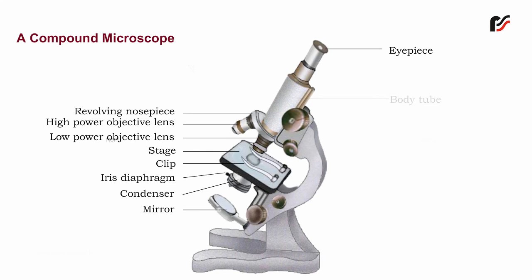Body Tube: It is a hollow tube which is attached to the upper part of the arm. It can move up and down with the help of screws.